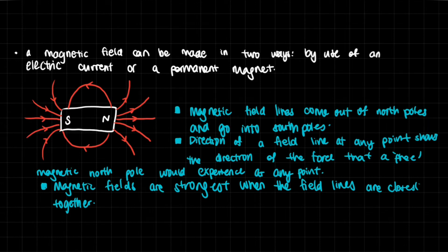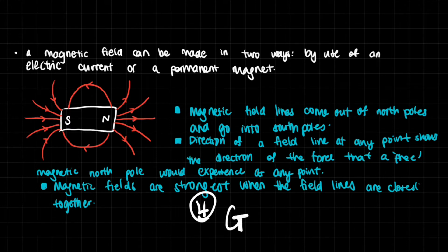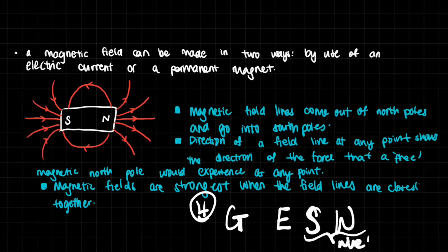I've always grown up thinking that magnetic fields and electric fields were two separate things, but it turns out they're very closely related. Physicists actually classify magnetic fields under the umbrella of electric fields. When we talk about the four forces in physics, we have gravitational forces, electric forces, the strong force, and the weak force. The strong and weak forces are only in the nucleus, and gravity's broader effects on us from the rest of the universe largely get ignored.